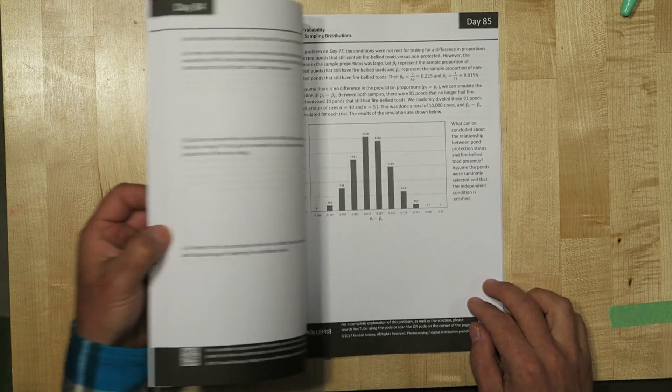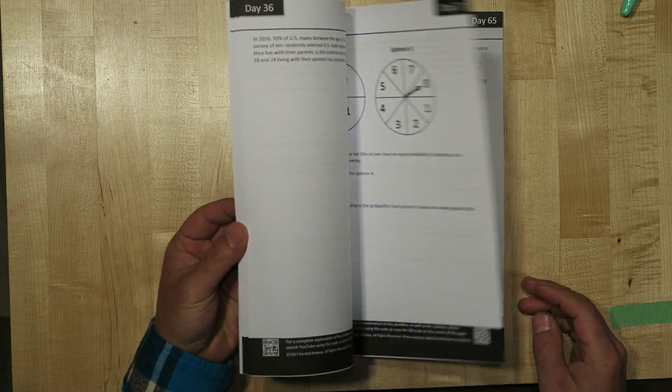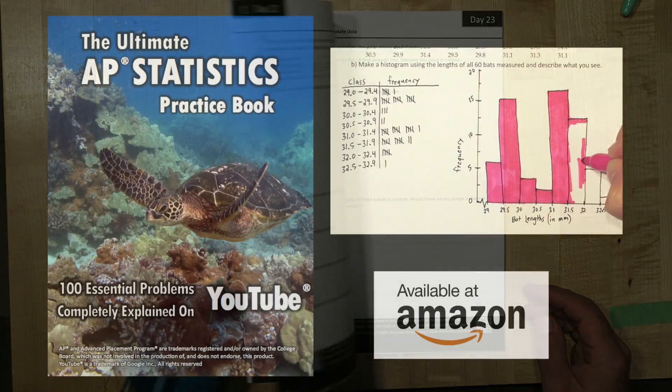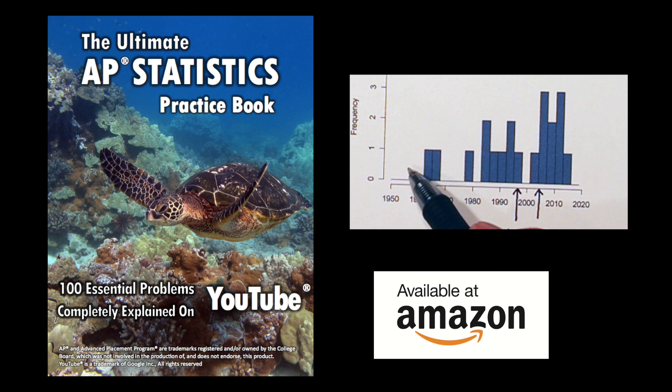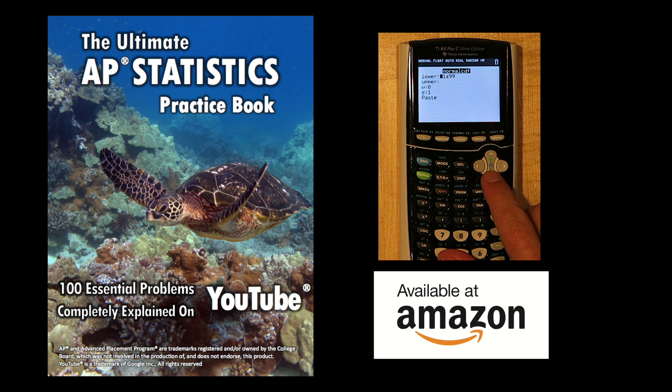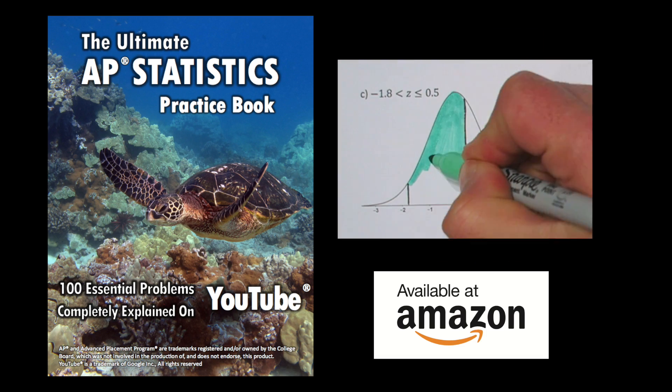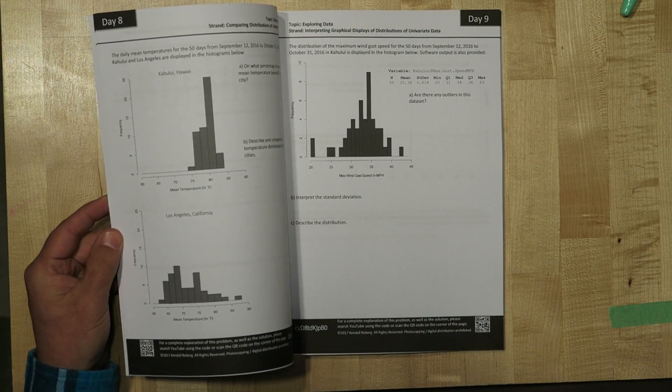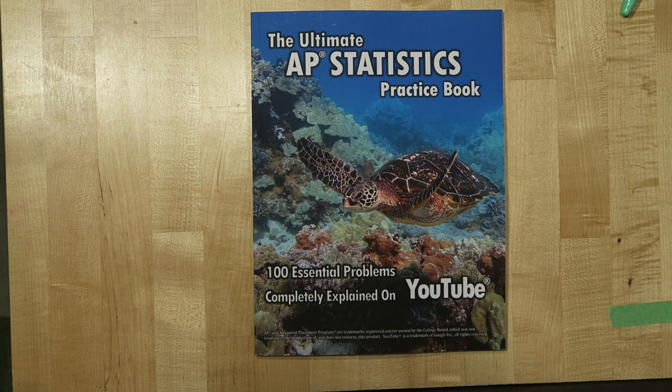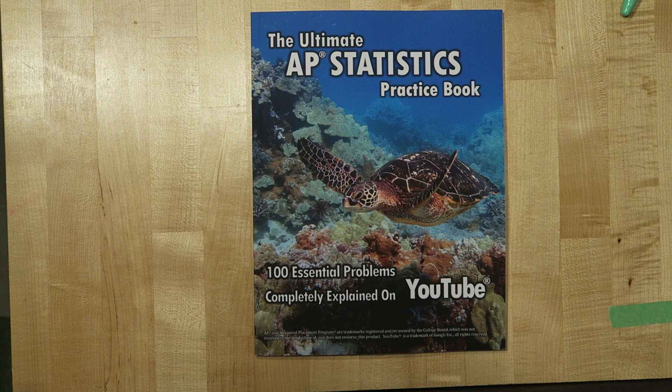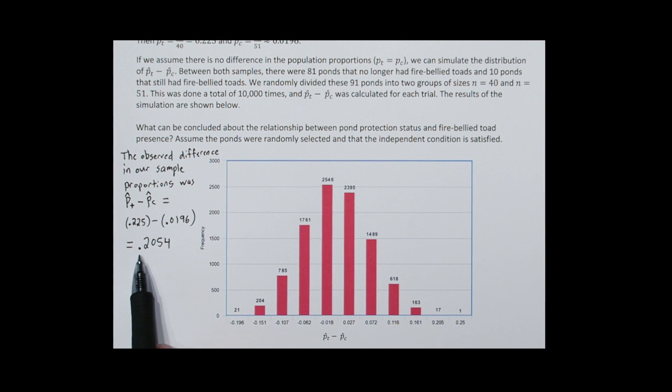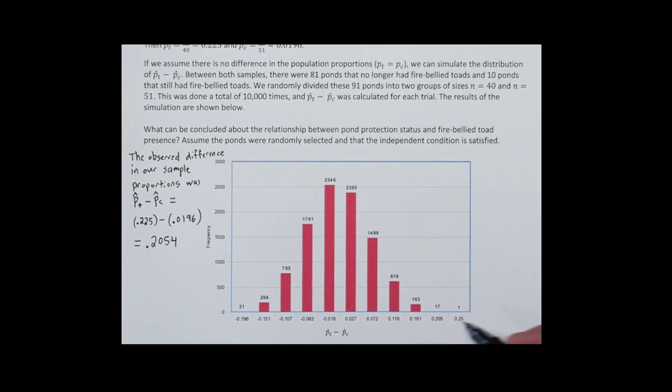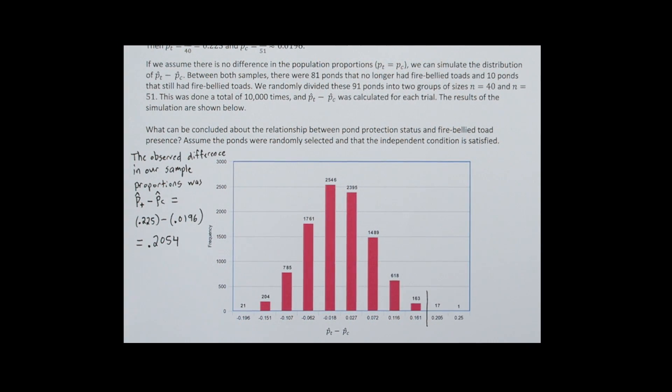If you liked my explanation of this problem, you might like my book, The Ultimate AP Statistics Practice Book. It has 100 problems in it, and every single problem has a YouTube video like this explaining every single step, every single calculator command, everything. This question six reminds me of a few problems from my book. It's similar to question 52 in particular, and also question 85. Those both have to do with sampling distributions, and 85 actually has to do with bootstrapping. I'll put a link to that video in the description. Also, if you're an AP stats teacher and you want a free copy of my book, just send me an email.